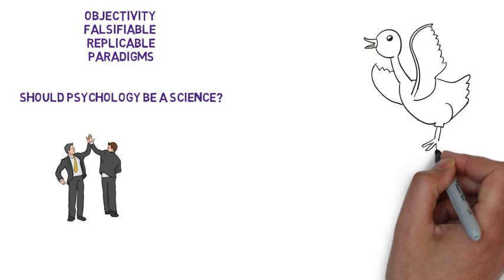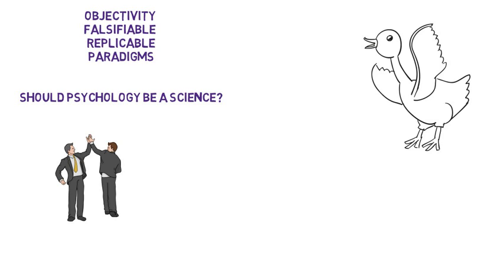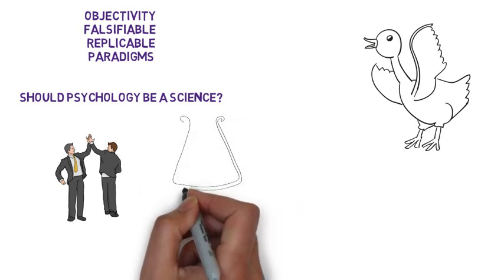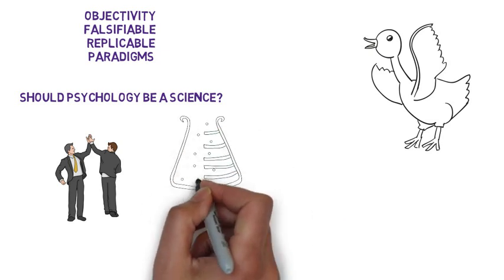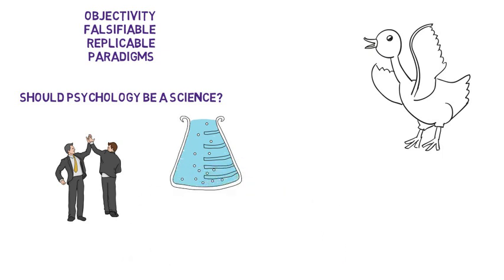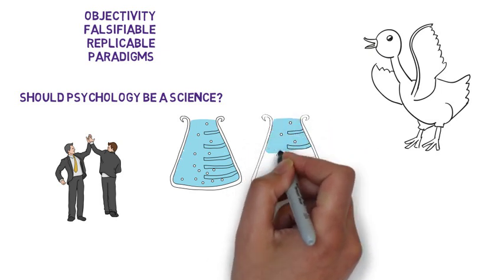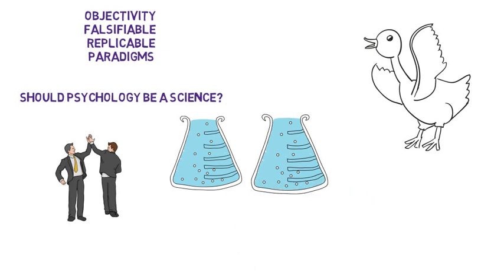The next one is replicability. This idea that you've got to be able to repeat what you've done, and one of the reasons is for reliability. Problematically in psychology though, case studies - we can't ethically really repeat a case study. It'd be entirely impractical to repeat a case study. Final one is the idea of paradigms. Paradigms are a kind of set of assumptions that a particular science might share. This is a massive problem for psychology because we come at things from so many different angles - maybe it's from the biological or from the cognitive or from the psychodynamics. So we don't share a single set of assumptions in psychology, which is perhaps the biggest reason we're not a science.